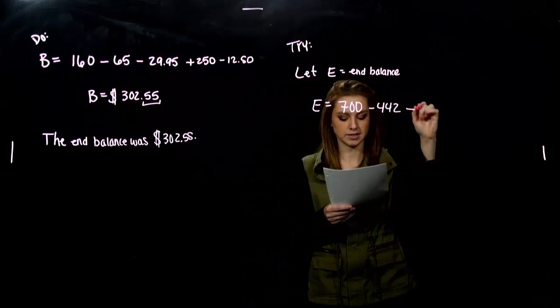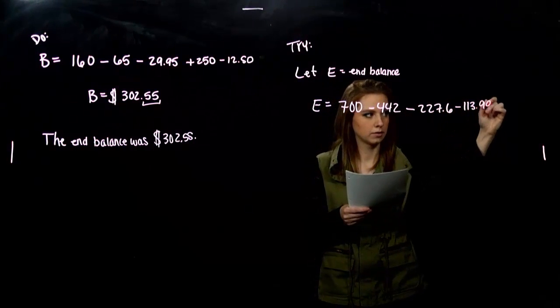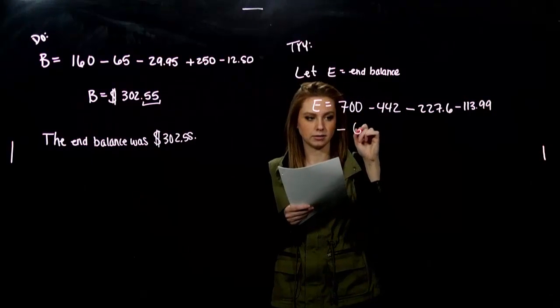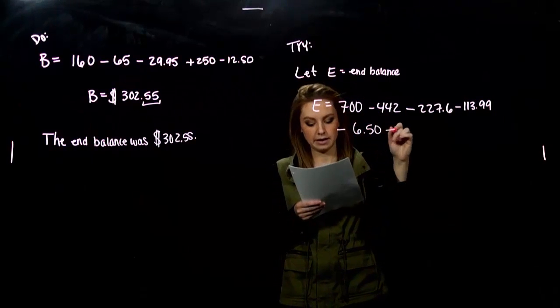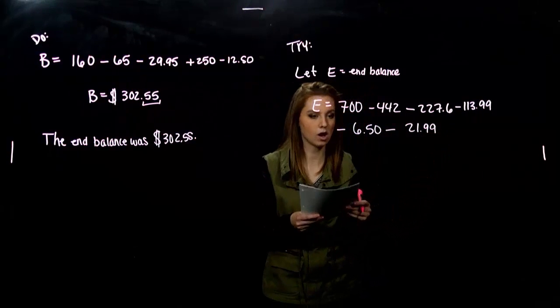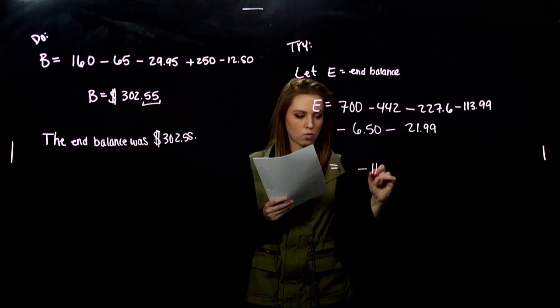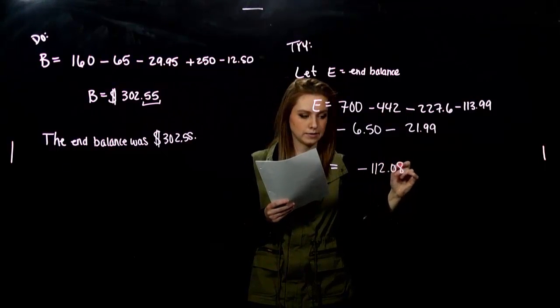You also bought the textbook. And then my MathLab code. In addition, you bought lunch. And bought a t-shirt. So all together, your ending balance, if you did it correctly, was negative $112.08.